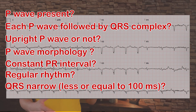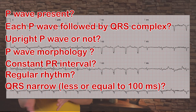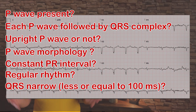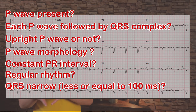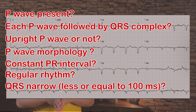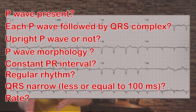Is the QRS narrow — equal to or less than 100 milliseconds? I quickly get the QRS duration from the computed value; it's fairly accurate. If you want to do it manually, check if the QRS is wider than half of a large box — remember each large box equals 200 milliseconds.